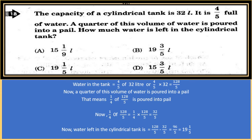The capacity of a cylindrical tank is 32 litres. It is 4/5 full of water. A quarter of this volume of water is poured into a pail. We have to find how much water is left in the cylindrical tank. Water in the tank = 4/5 of 32 litres = 4/5 × 32 = 128/5.